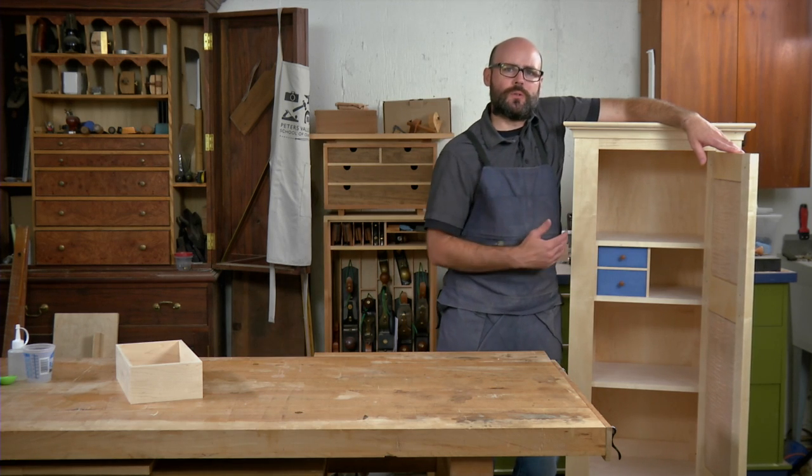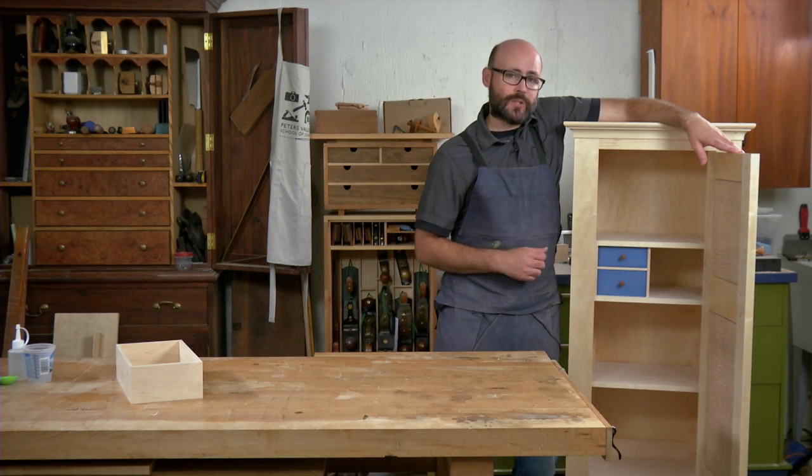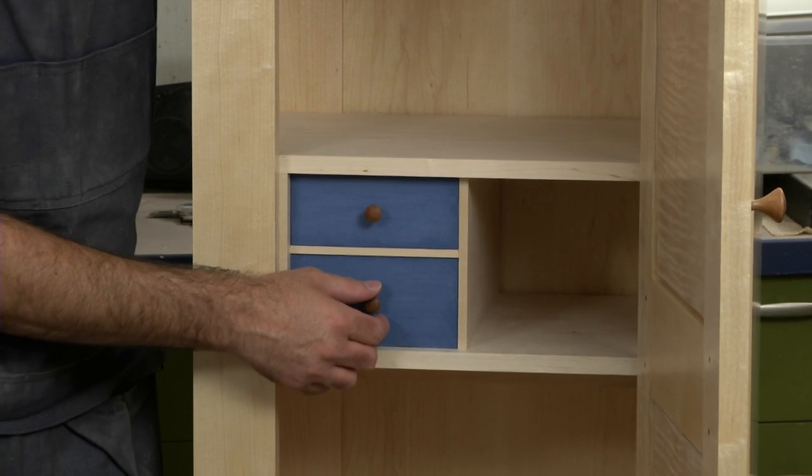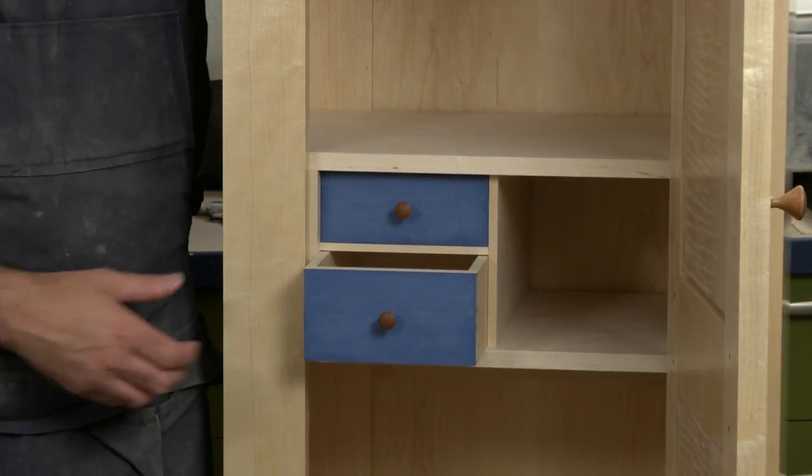That's why I added two small drawers on the inside. They also make the inside more useful, but I didn't want those drawers to stick out too much, so to tie them into tradition, I painted the fronts with blue milk paint.